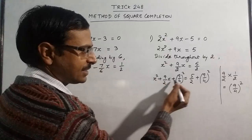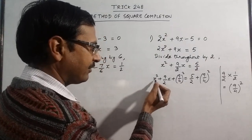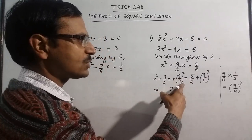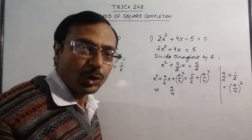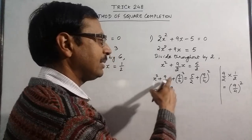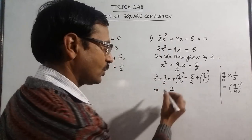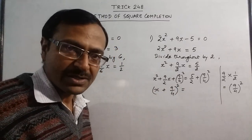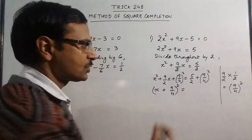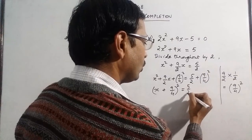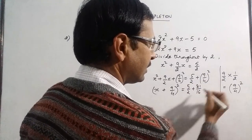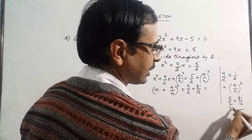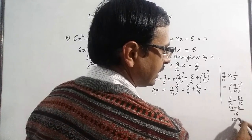Now these three terms on the LHS — the square of x, twice the product, and the square of 9/4 — form a² + 2ab + b², which becomes (a + b)², that is (x + 9/4)². We have completed the square, which is why this method is called the method of square completion. On the RHS, solving 5/2 + 81/16: converting to the same denominator of 16 gives 40/16 + 81/16 = 121/16.